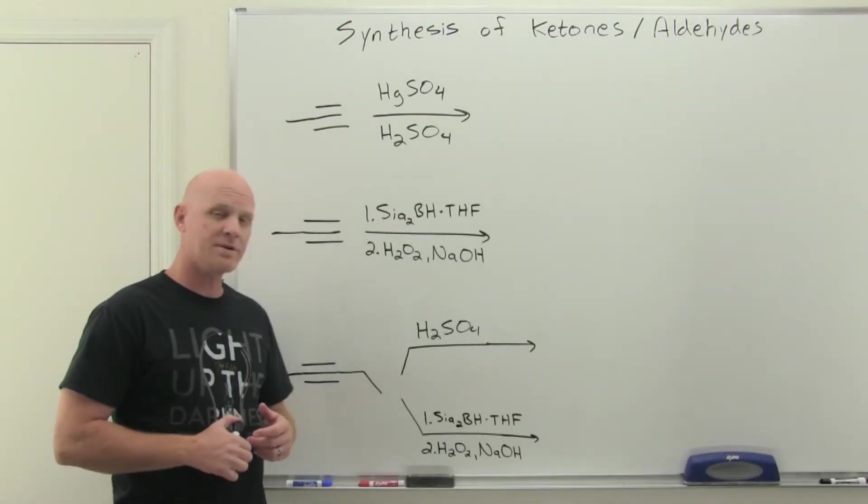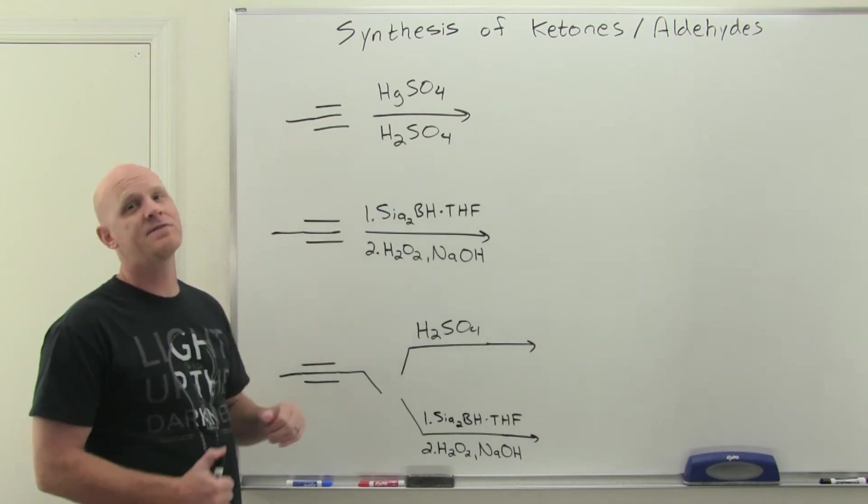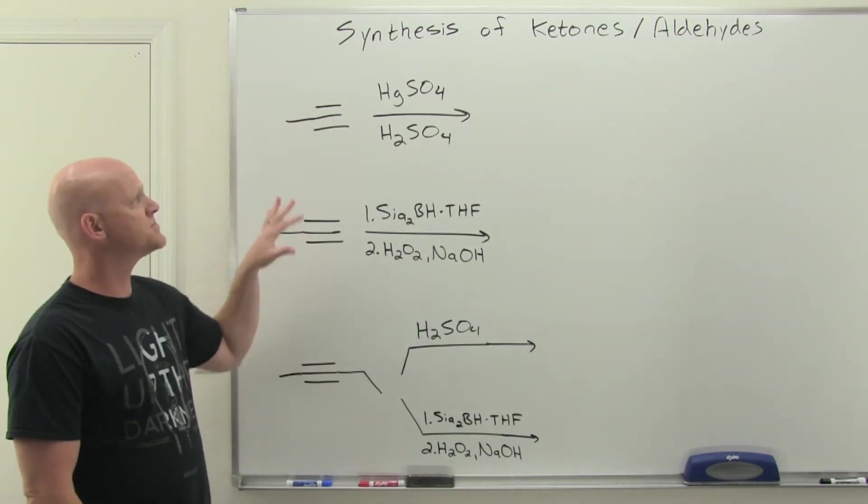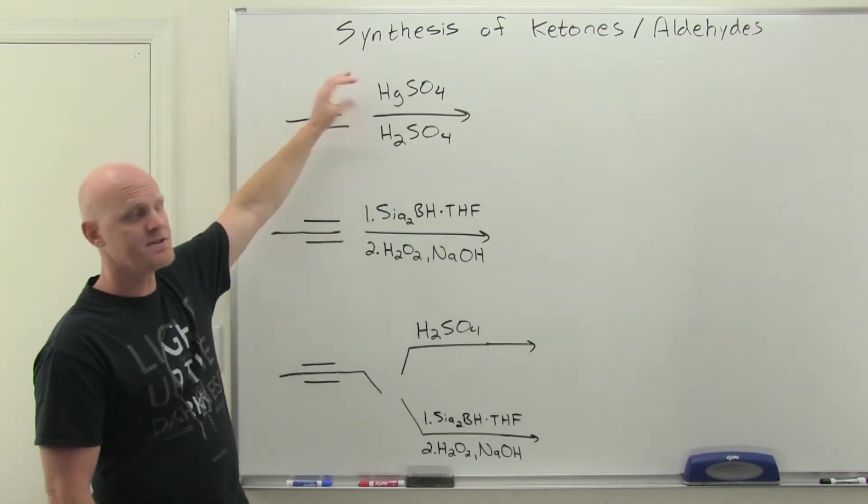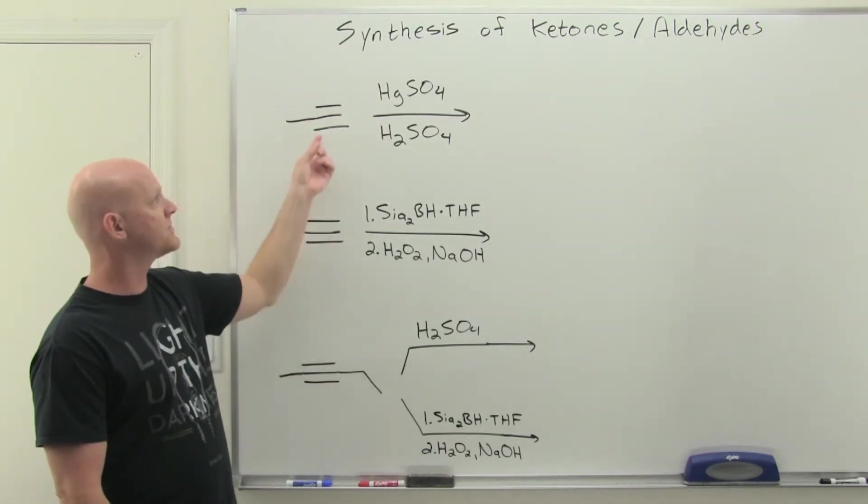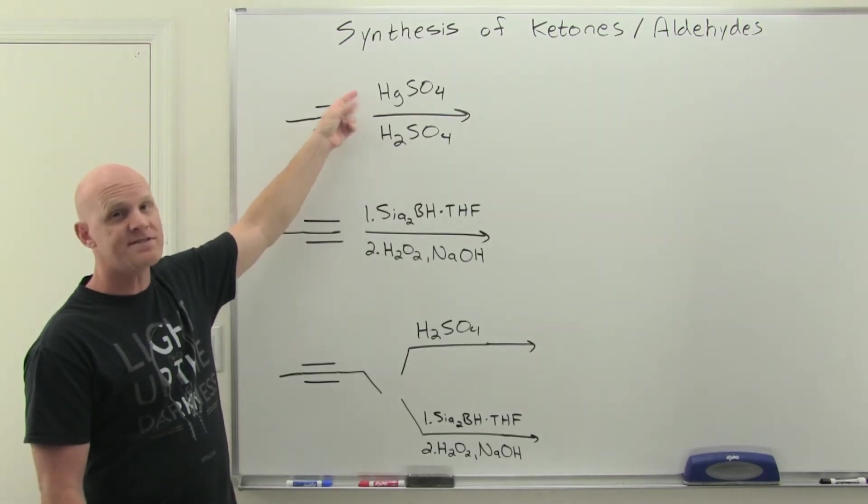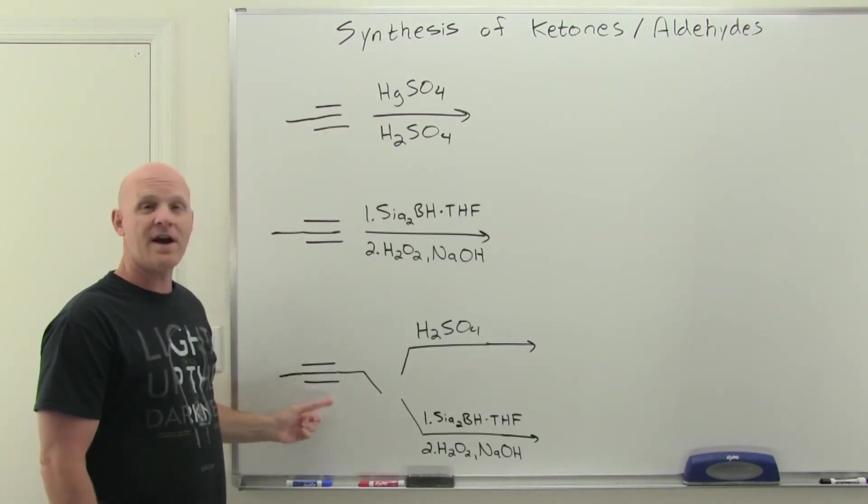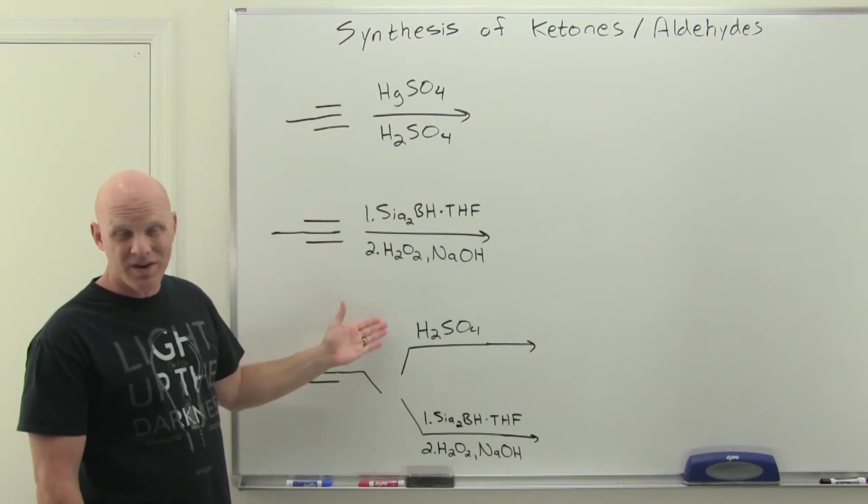So next reaction to review here for forming ketones and aldehydes is the hydration of alkynes. We have two major reactions for this. We had acid catalyzed hydration. For a terminal alkyne, the reagent's a little bit different than for an internal alkyne. So it turns out the terminal alkyne, you need mercury 2+ as a catalyst. For the internal alkyne, you don't need the mercury. You can use it, you just don't need it.